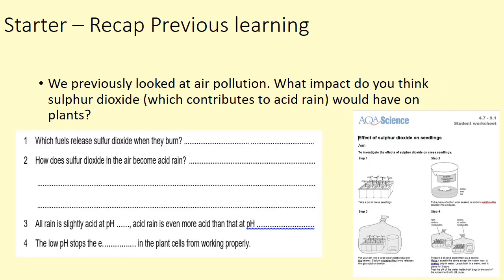Before we continue with the water pollution, I want to recap some of the work we did on air pollution in class. Think about sulphur dioxide, which we know contributes to acid rain, and what impact that would have on plants. If we were able to get into the lab, we'd possibly do an experiment where we'd take some cress seedlings and grow them in an environment with raised sulphur dioxide levels, doing a comparison to see how well or not so well they grow. Which fuels release sulphur dioxide when they burn?